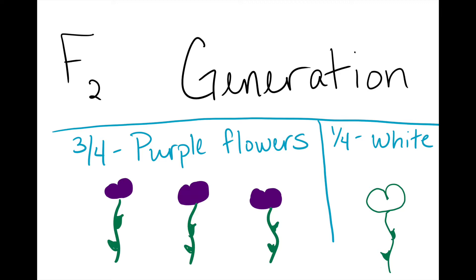Mendel repeated his experiments and analyzed other pea plant traits like plant height, seed color, seed shape, pod shape, and flower position.